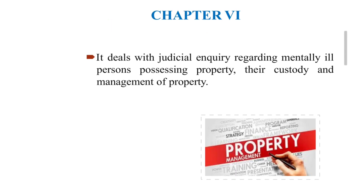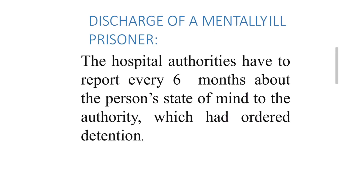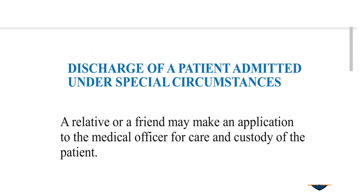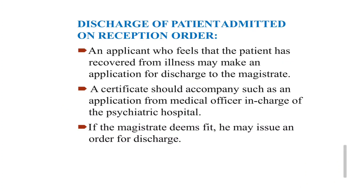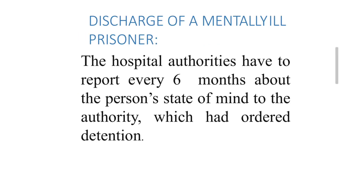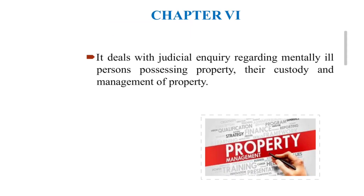To summarize chapter 5, discharge procedures include: voluntary discharge, discharge of a patient admitted under special circumstances, discharge of a patient admitted on reception order, discharge of a mentally ill prisoner, and discharge on leave of absence or parole. Chapter 6 deals with judicial inquiry regarding mentally ill persons possessing property, their custody and management of property.